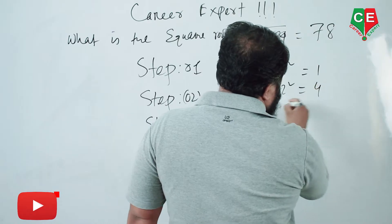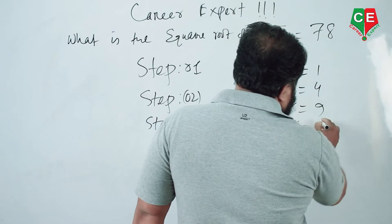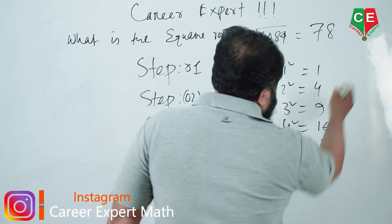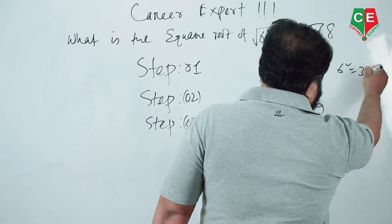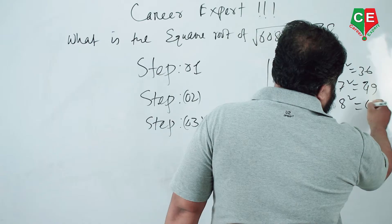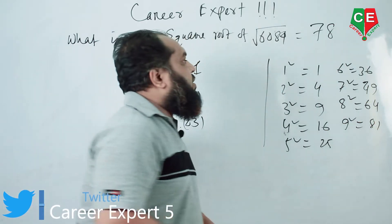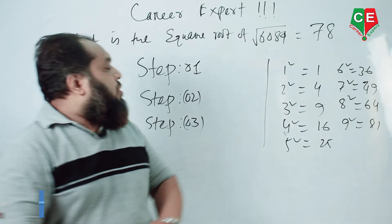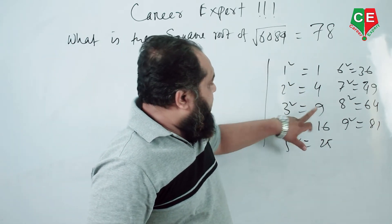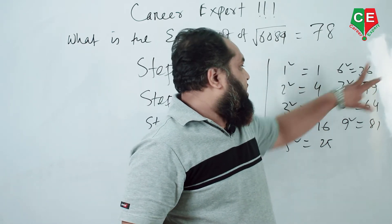Now we will note: 1 squared equals 1, 2 squared equals 4, 3 squared equals 9, 4 squared equals 16, 5 squared equals 25, 6 squared equals 36, 7 squared equals 49, 8 squared equals 64, 9 squared equals 81. Just have a look and memorize these.